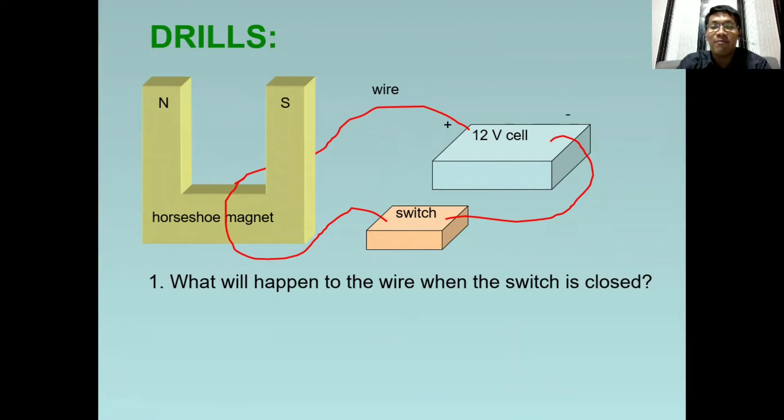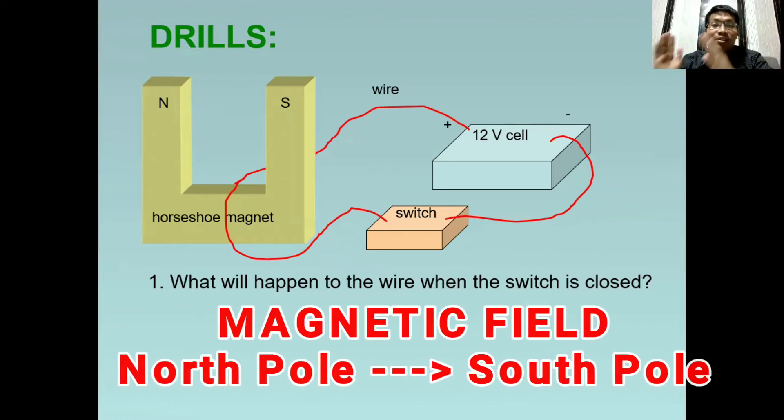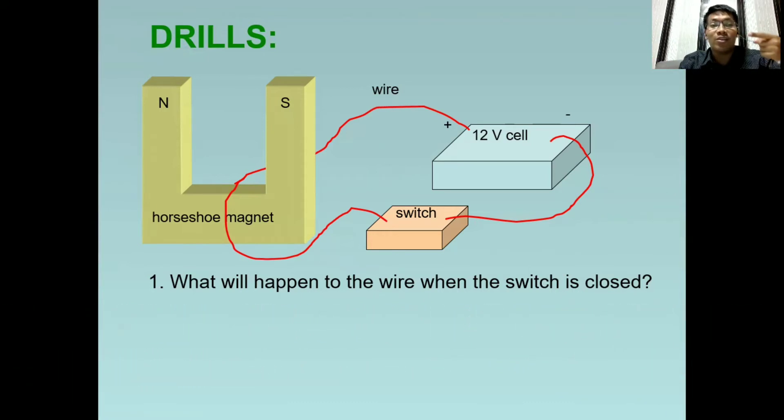So let's apply now the Fleming's left-hand rule. So first, we will use our forefinger. Again, ang ating forefinger represents the field. Forefinger, so field or magnetic field. So tatandaan natin na ang magnetic field ng magnet ay parating from north to south. Again, it is from north to south. So kung tinitingnan ninyo itong illustration na ito, you will point your forefinger from north to south direction. So ganito yung magiging itsura niya. Pwede nyo rin gawin para ma-visualize nyo kung paano siya ina-apply or paano ginagamit ang Fleming's rule.